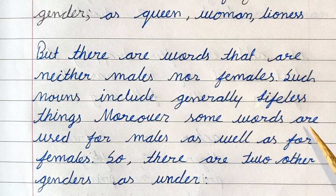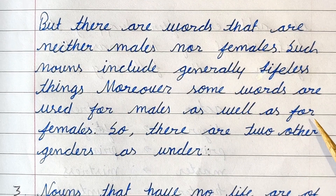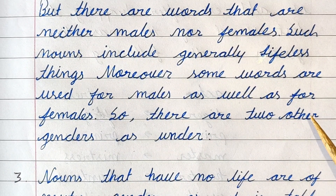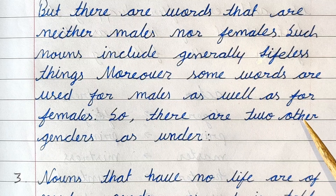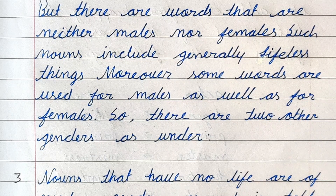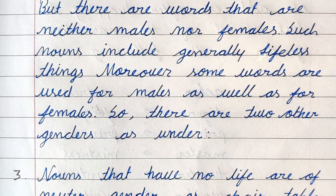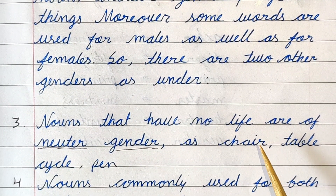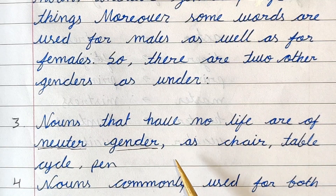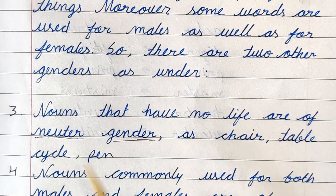These are neuter gender and common gender. Nouns that have no life are of neuter gender — for example, chair, table, cycle, pen. Things that have no life are kept in the neuter gender: chair, table, cycle, pen.